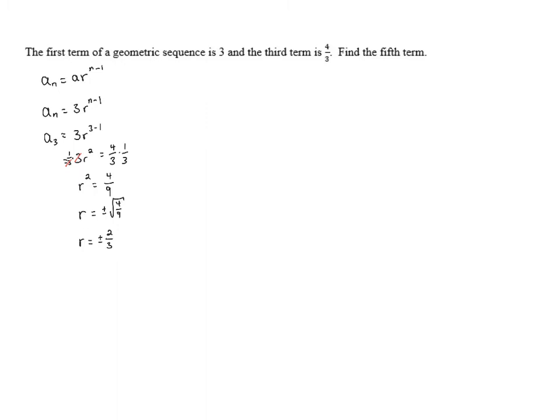Which is initially appearing to be quite a conundrum. There are two values of r that end up working out here. It could either be 2/3 or negative 2/3. So either a_n = 3(2/3)^(n-1) or a_n = 3(-2/3)^(n-1).